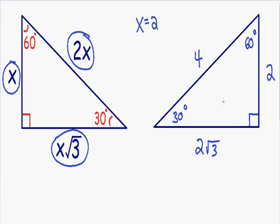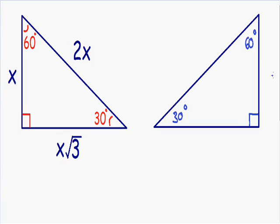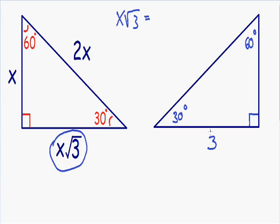That was an easier example, so let's go over a harder one. In this example, we are going to be given the length of the side opposite of the 60-degree angle. Let's say that the length of the side opposite of the 60-degree angle is equal to 3. The length opposite of the 60-degree angle is equal to x multiplied by the square root of 3, so x times the square root of 3 is equal to 3.